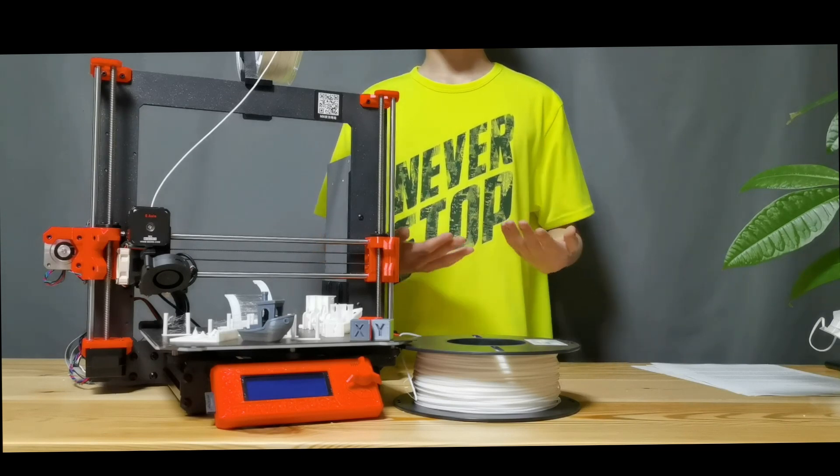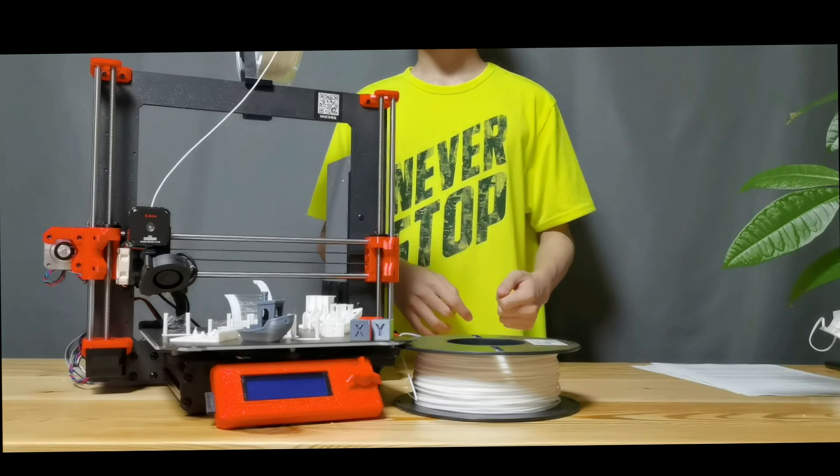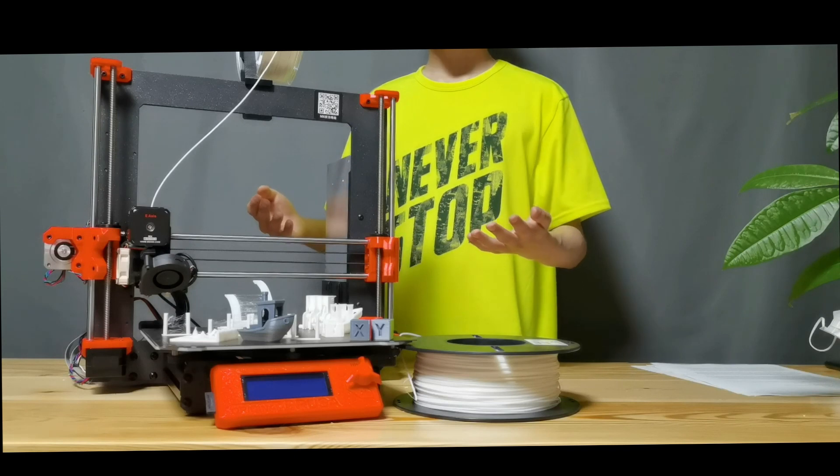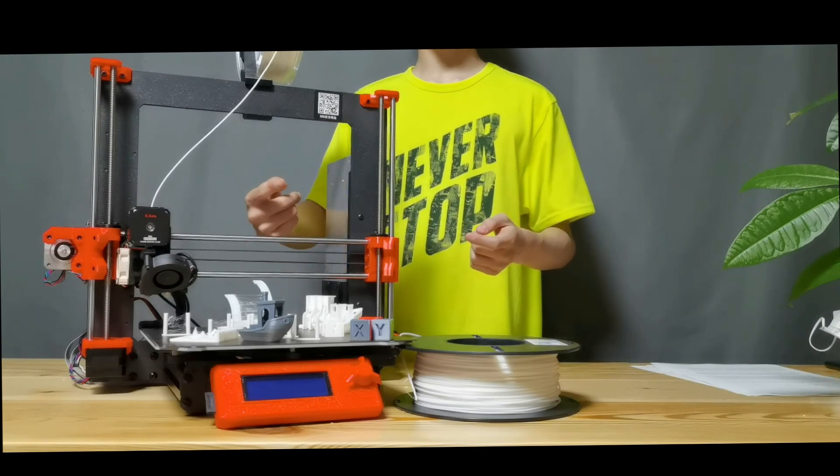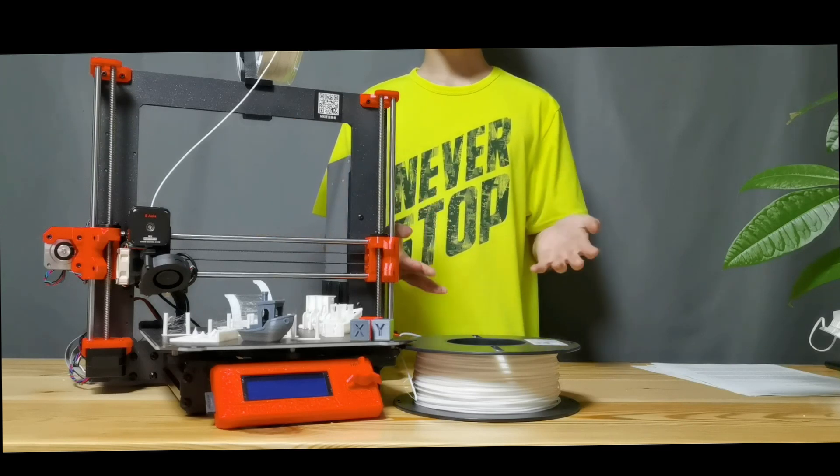And since the CR-10 is a relatively large machine, a lot of things can happen very quickly. This machine, however, is not particularly large. In fact, it only has a build volume of 25x25x21 centimeters. So not the biggest printer I've ever had, but not the smallest either.